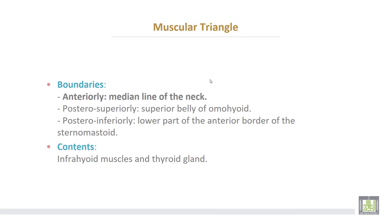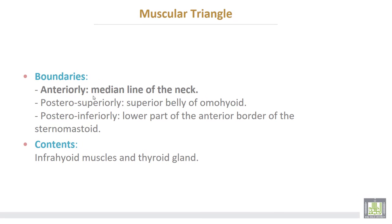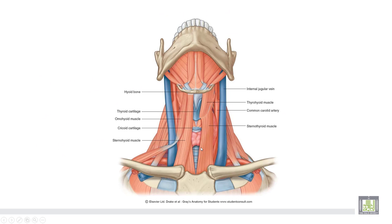The muscular triangle is bounded anteriorly by the midline of the neck, posterosuperiorly by the superior belly of the omohyoid muscle, and posteroinferiorly by the lower part of the anterior border of the sternomastoid. The contents of the muscular triangle are the infrahyoid muscles: sternohyoid, thyrohyoid, sternothyroid, and omohyoid, in addition to the thyroid gland.